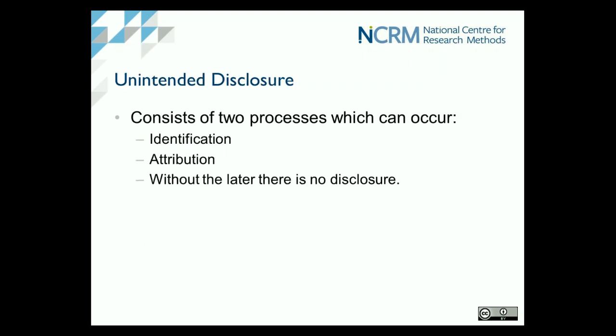Unintended disclosure is disclosure of personal information, unintended by the data owner, and consists of two possible processes: identification and attribution. Attribution is the act of disclosure. Identification is the association of some data with an individual population unit — normally a person. Attribution is finding something out about that person, and that total system creates a disclosure.